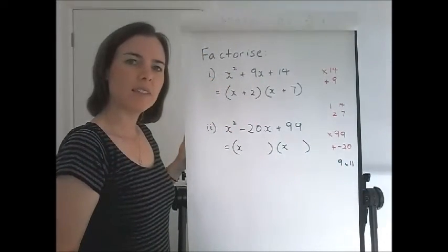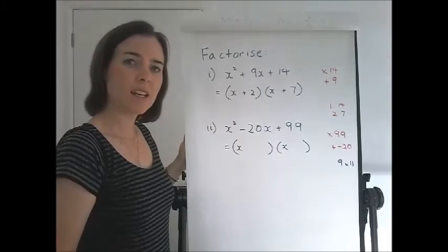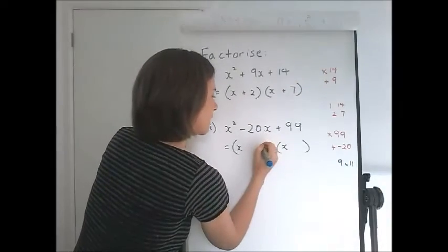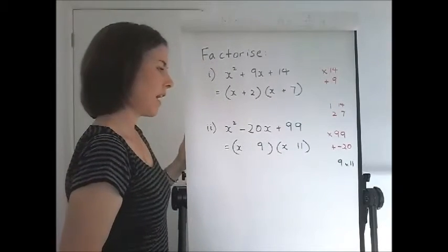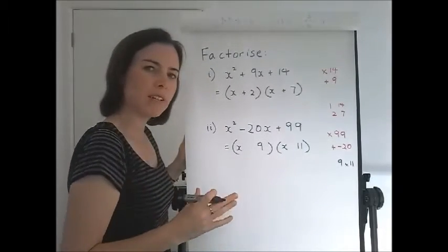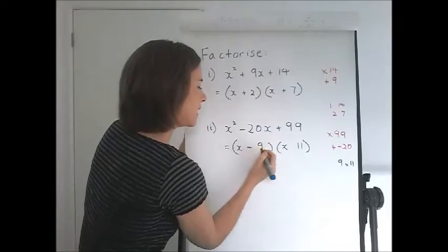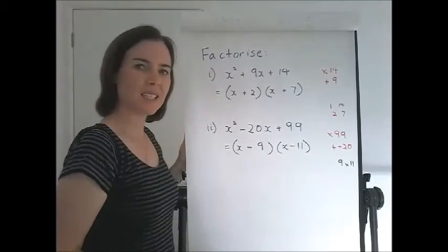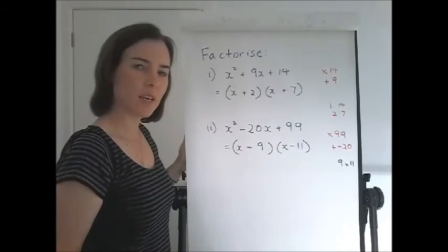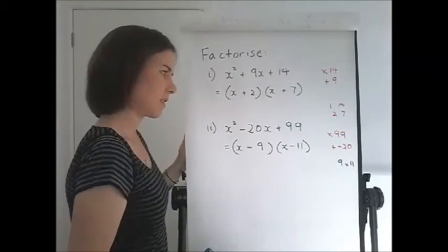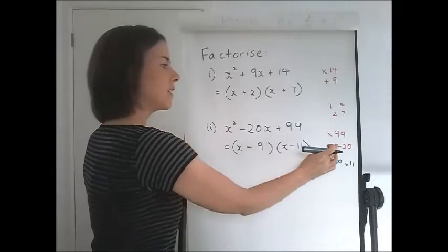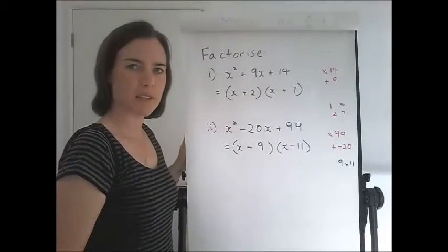Now 9 and 11 times to 99 and add to 20. So they sound like good potential. And if we play around with the signs and eventually settle on them both being negative, let's check that that works. Do they multiply to positive 99? Yes. Do they add to negative 20? Yes.